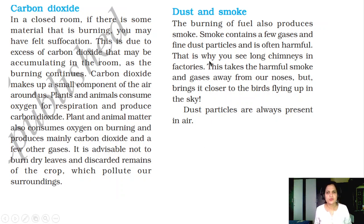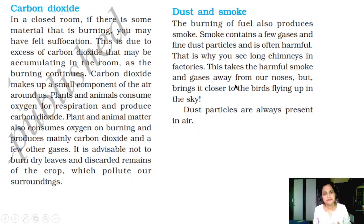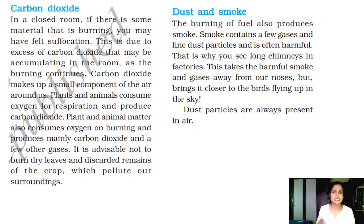Dust and smoke. The burning of fuel also produces smoke. Smoke contains a few gases and fine dust particles and is often harmful for human breathing. That is why you see long chimneys in factories — they want the smoke to go into the upper layers of the atmosphere rather than staying low. Chimneys should be higher above the factories to take harmful smoke and gases away from our noses, but this brings it closer to birds flying in the sky, which is harmful for them.